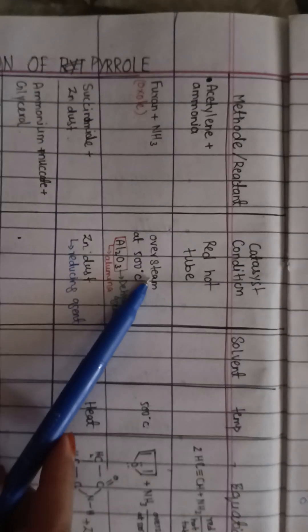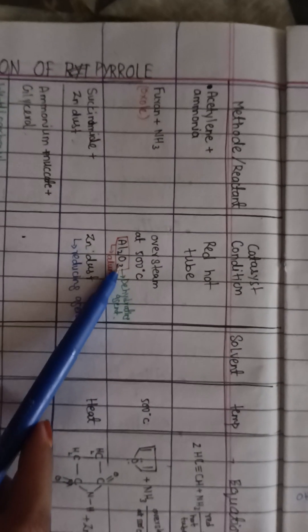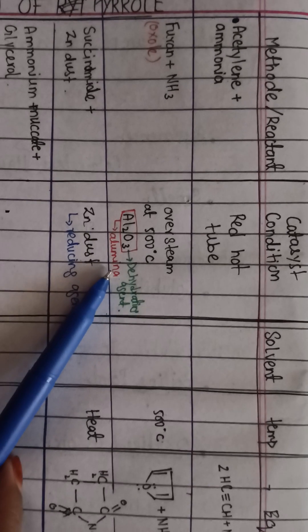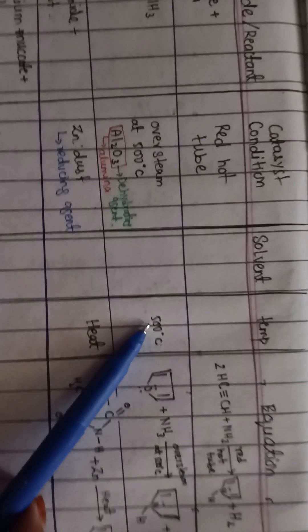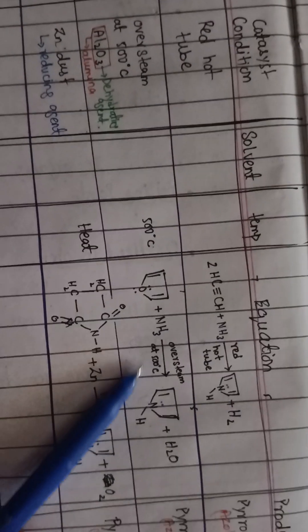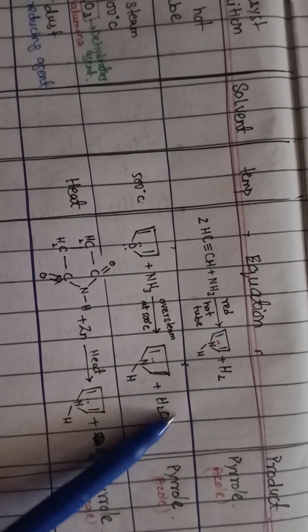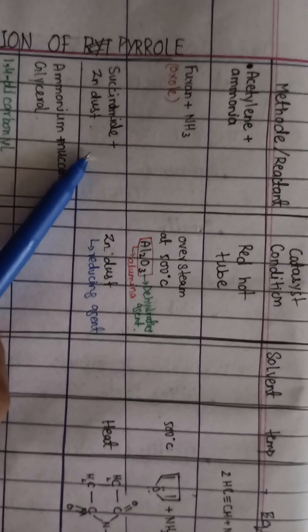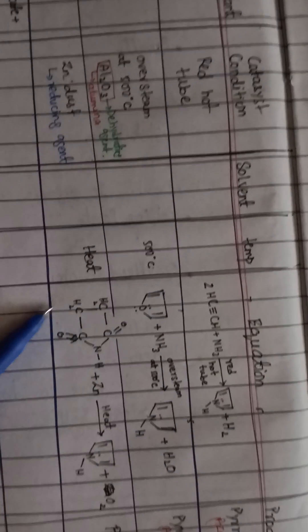The second method involves reacting furan with ammonia over steam at 500°C with Al2O3 as a dehydrating catalyst; water is released and pyrrole is formed. The third method uses succinimide treated with zinc dust — zinc dust acts as a reducing agent, the oxygen is released, and pyrrole is formed.